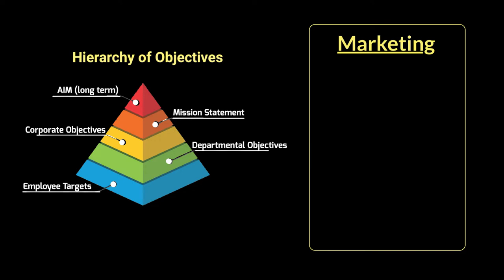This helps us understand that whatever each department has to do, it has to be in line with the overall business's corporate objectives. A business does not just comprise of one or two departments but many — we know four which will always be there: marketing, operations, finance, and HR. Unless all of those individual departments combine and have their objectives in line with the overall business objectives, nothing will work. So marketing must be in keeping with what the business wants to do.